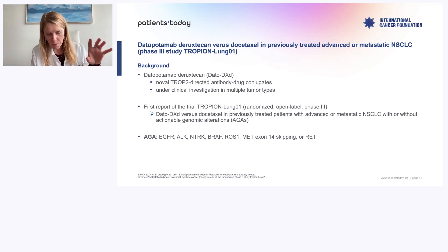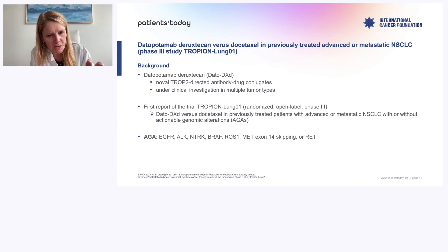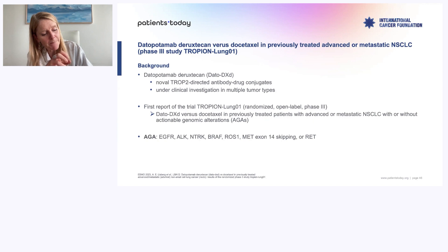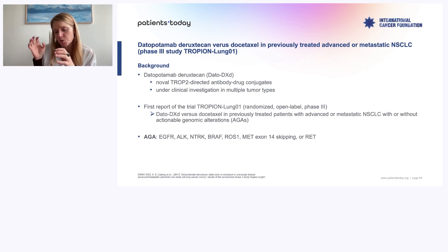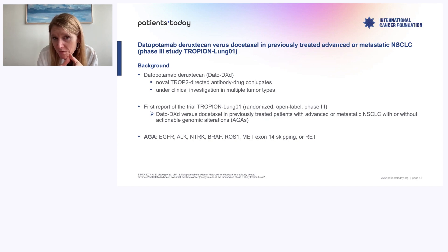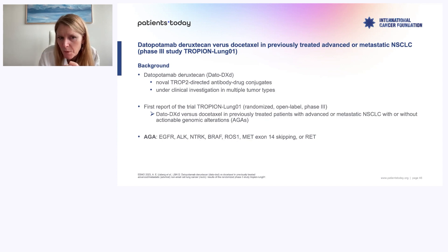Now we have this new generation of ADCs — antibody drug conjugates. An antibody targets a protein mainly expressed on cancer cells. It binds to the protein on the surface of the cancer cell and carries on the back a very toxic chemo called a payload — a super toxic chemo you could not give IV because it's too toxic. One of these target proteins is called TROP2, highly found in metastatic lung cancer but also in breast cancer. The payload is a drug called deruxtecan — a very toxic chemo.